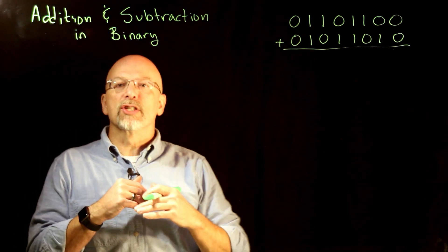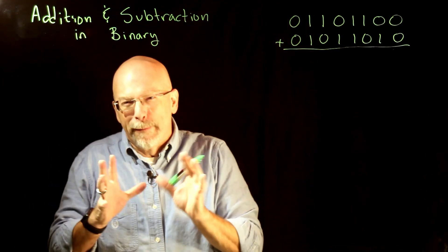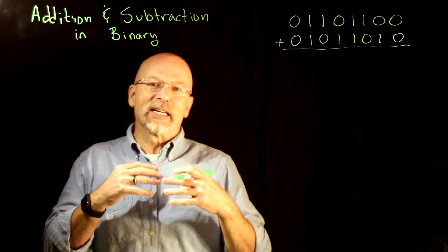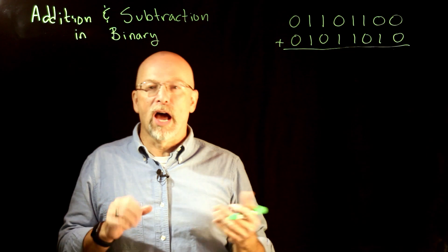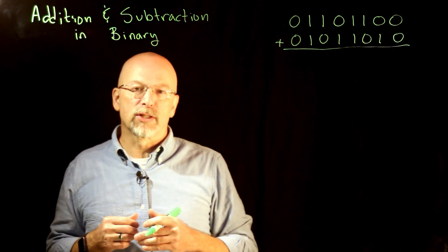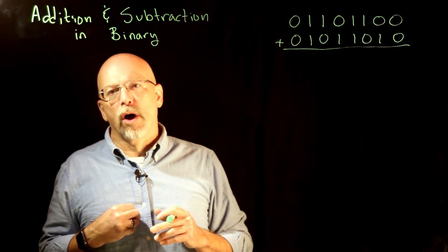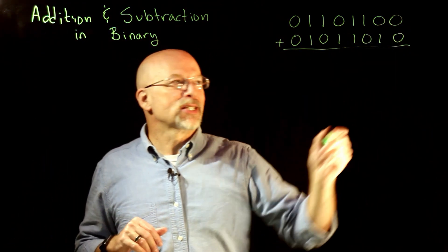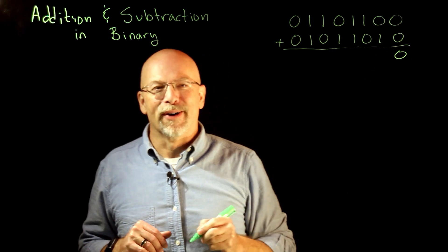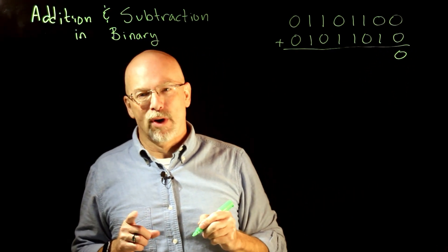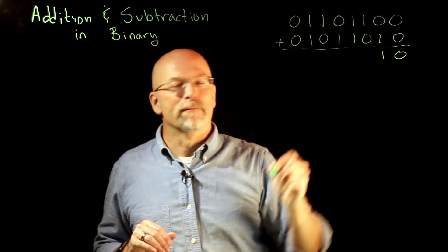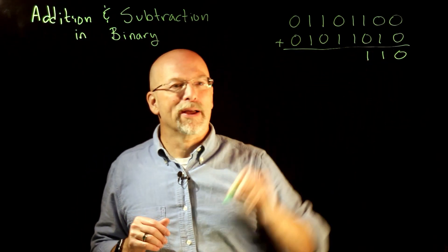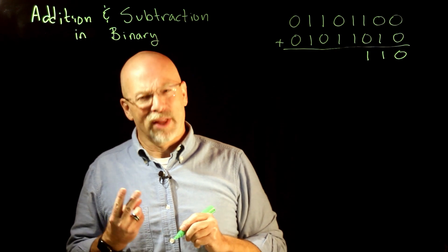Hopefully this makes sense because all we're doing is using exactly the same principles, just with fewer symbols to represent our base. Instead of having ten decimal digits zero through nine, in binary we've only got zero and one. So let's go ahead: zero plus zero in any base is zero, and zero plus one in any base is one.